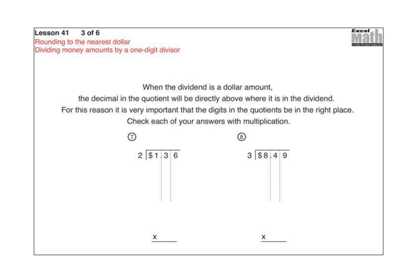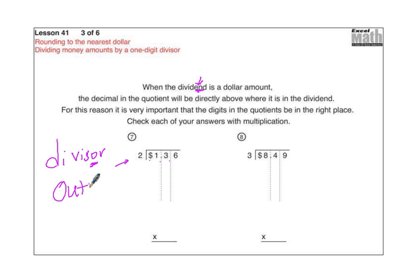Now, how about dividing money? When the dividend is a dollar amount — here's the dividend — remember, the dividend is on the inside and the divisor is on the outside. The 'EN' in dividend reminds me of 'inside,' and the O in divisor reminds me of 'outside.' A little review there, because today's lesson is pretty simple.